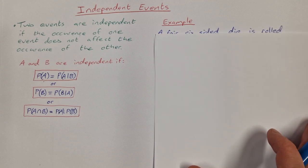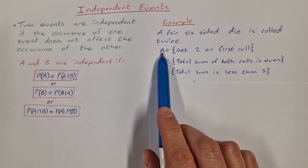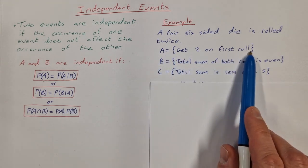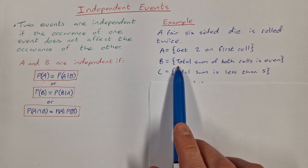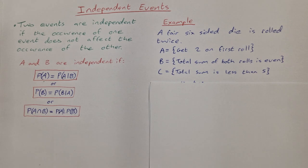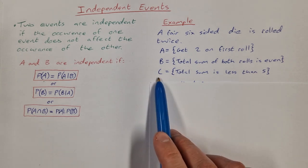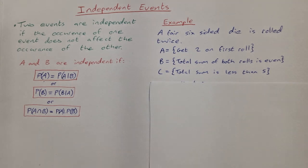So we're going to take a look at an example. A fair six-sided die is rolled twice. Event A is getting a 2 on the first roll. Event B is getting a total sum of both rolls being even — so 2, 4, 6, 8, etc. And event C is the event that the total sum is less than 5.